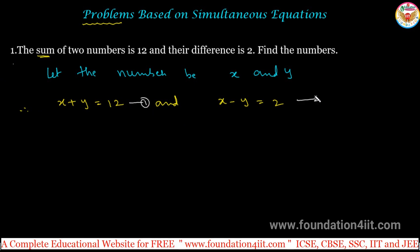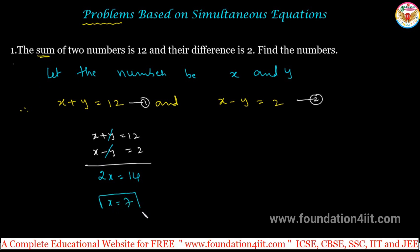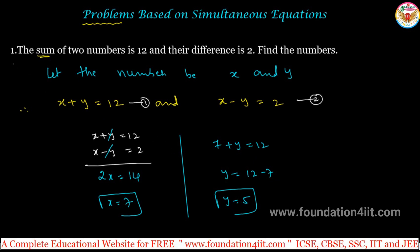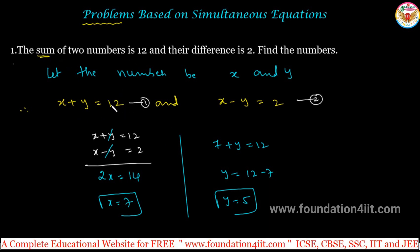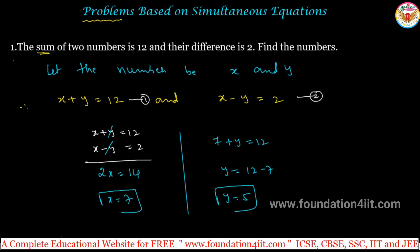Taking equation 1 and 2 together: x + y = 12 and x − y = 2. Adding: plus y and minus y cancel, 2x = 14, x = 7. Substituting: x + y = 12, so 7 + y = 12, y = 5. The numbers are 7 and 5. You can verify: sum is 12 by adding, and subtract gives 2.